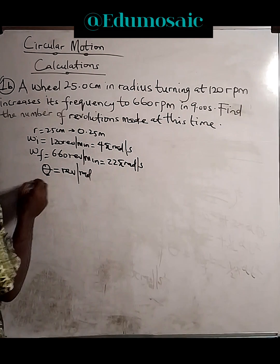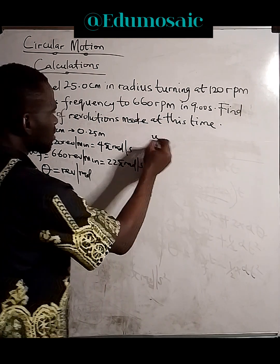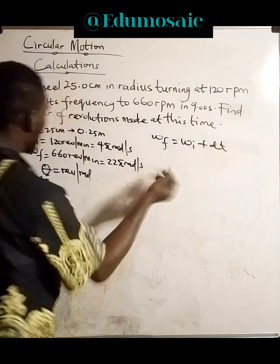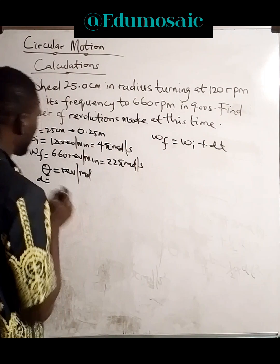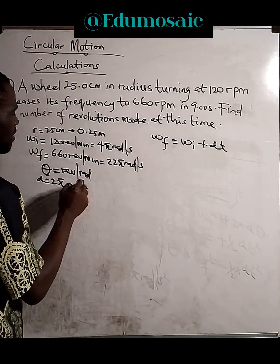So, we have our angular acceleration. We can easily get that using this formula. And when we input those values into this, we end up getting 2 pi rad per second squared.